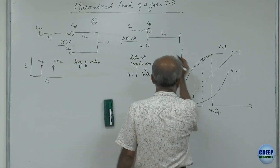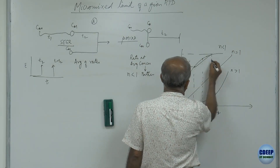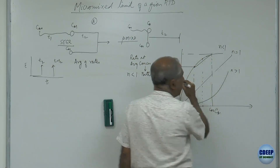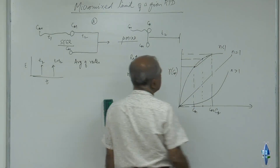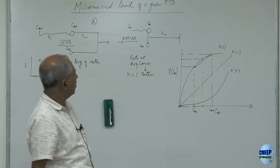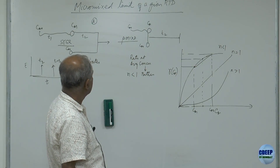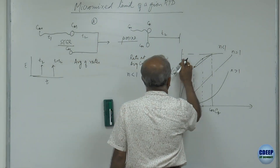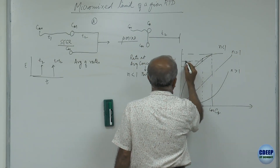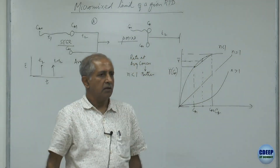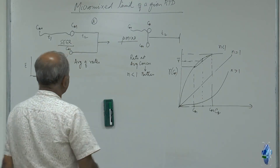In the other case, we have to average the rates at the two concentrations. Taking the midpoint, average of the rates is less than the rate at the average concentration for n less than 1. So the micromixed case is better for n less than 1. For first order, it does not make any difference.